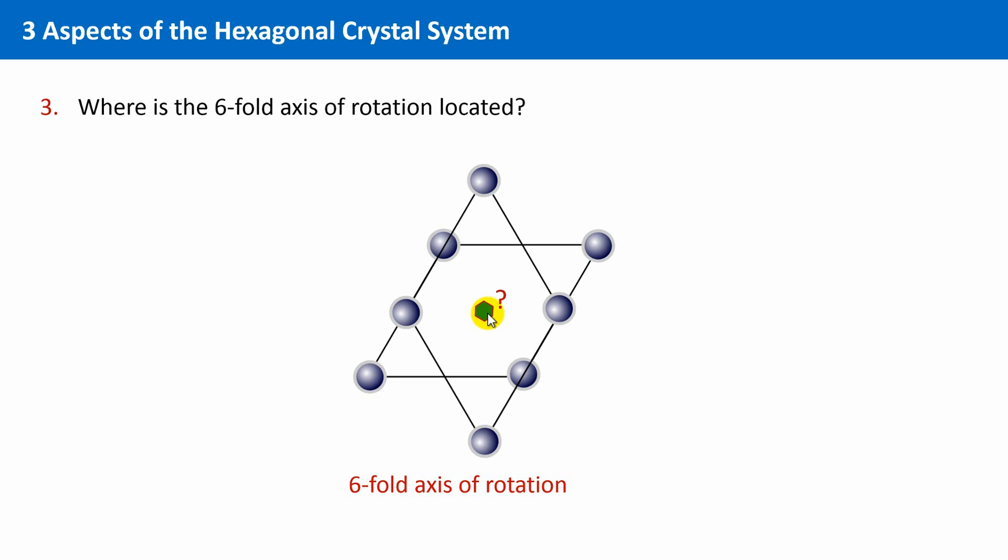The solution to this riddle is that the axis of rotation is located at one of the lattice points, at the corner of the unit cell. If we now carry out the rotation by 60 degrees, we end up with this pattern.